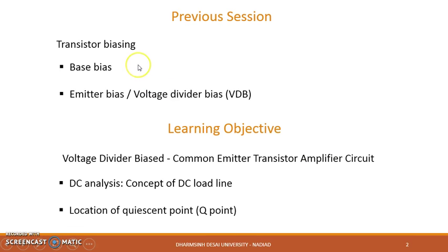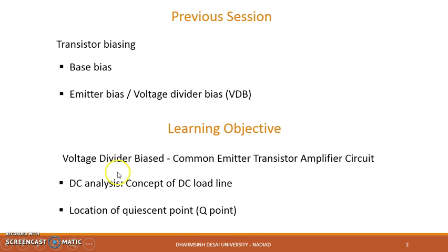In the previous session, Prof. Smith Villapil covered the concept of transistor biasing, in which the concept of base bias and emitter bias was explained, and the improvement in emitter bias — that is, voltage divider bias — was also introduced. In this session, for the voltage divider biased common emitter amplifier circuit, DC analysis will be carried out, with our major concern being the DC load line and the location of the Q point on that load line.